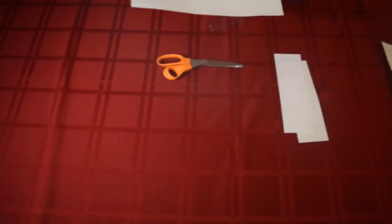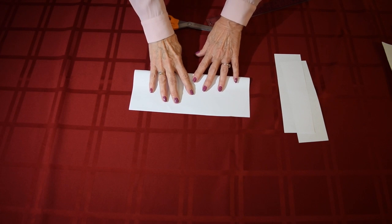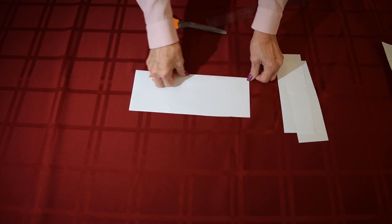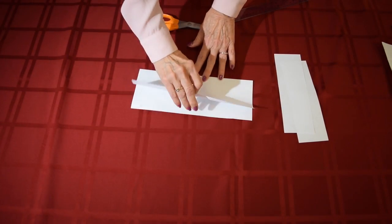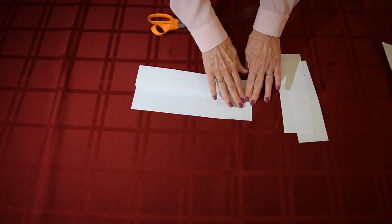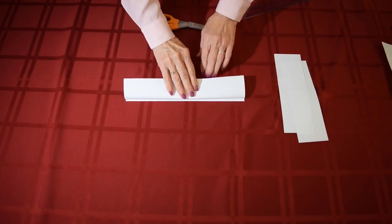The folding we will do first is called a hot dog fold. That is the long way of the paper. We make one long crease and then we are going to fold it back and make a crease, and then we are going to turn it over and fold it back.